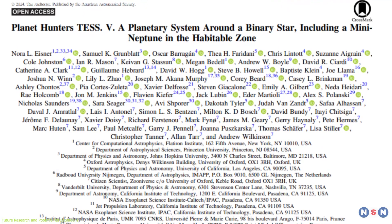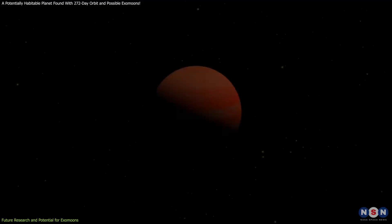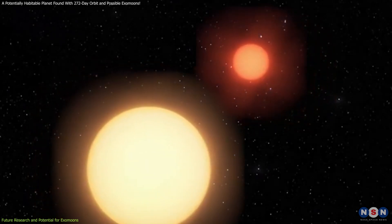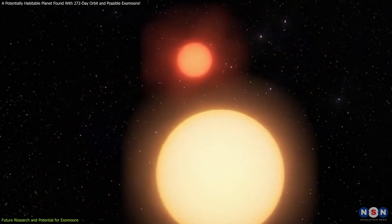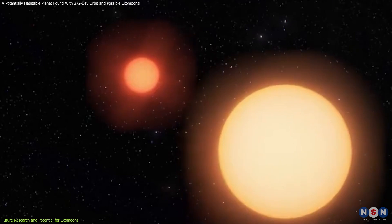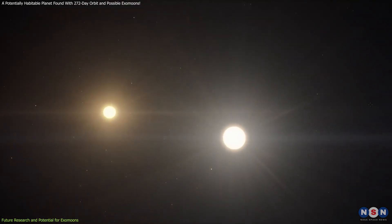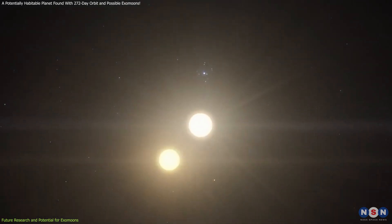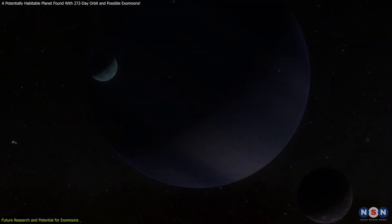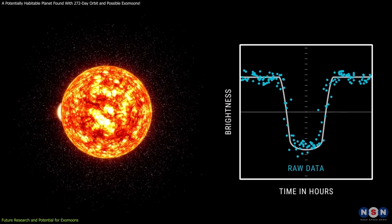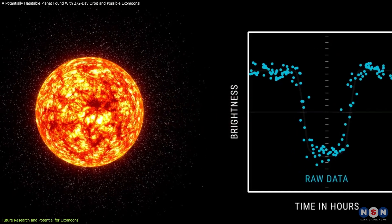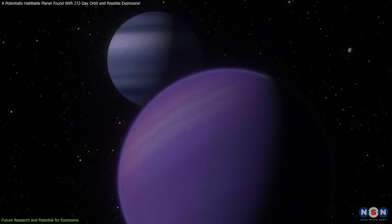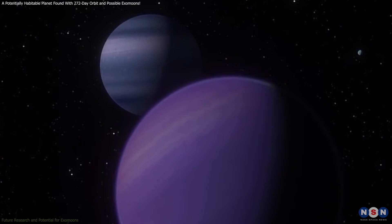Furthermore, the discovery of this exoplanet highlights the importance of long-term observational campaigns. The archival data used to confirm the binary nature of the star system spanned over 119 years, demonstrating the value of historical observations in modern astronomical research. The search for exomoons around it will involve monitoring the planet's transits for variations in timing and brightness. These variations could indicate the presence of a moon, providing valuable insights into the planet-moon system and its potential.